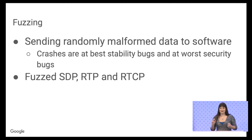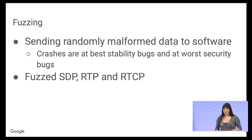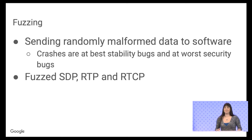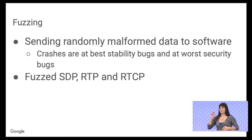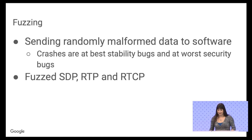I fuzzed three things. One was SDP — I picked that because if there's ever a bug in SDP, it's fully remote, since clients will typically exchange SDP before the user picks up the call. I also looked at RTP and RTCP because they have a large amount of code and I thought it was very likely they would have vulnerabilities in them.